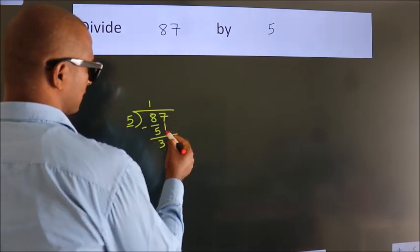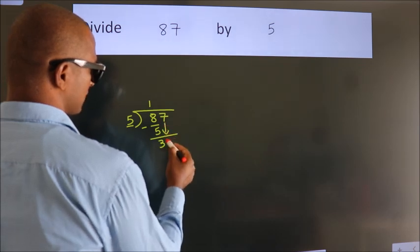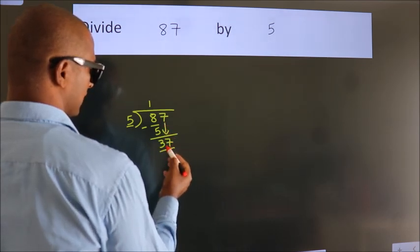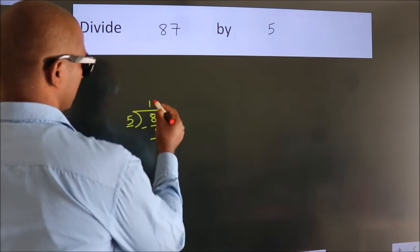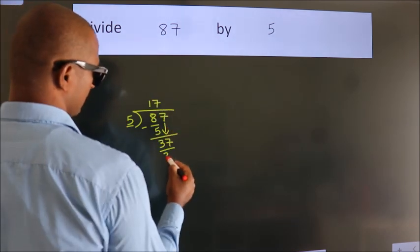After this, bring down the beside number. So, 7 down. So, 37. A number close to 37 in 5 table is 5 7s 35.